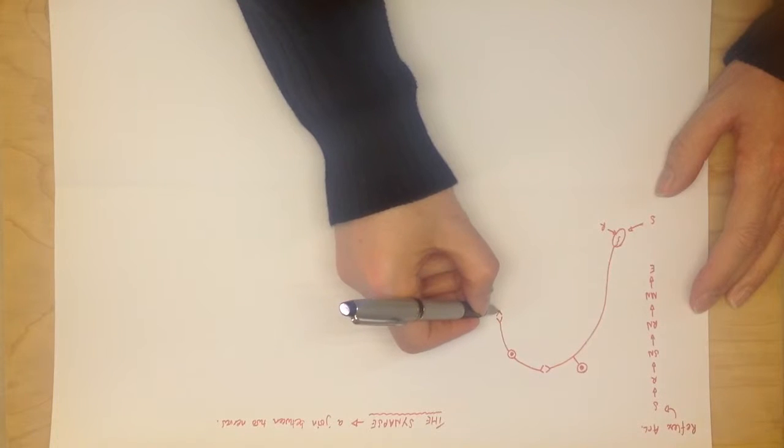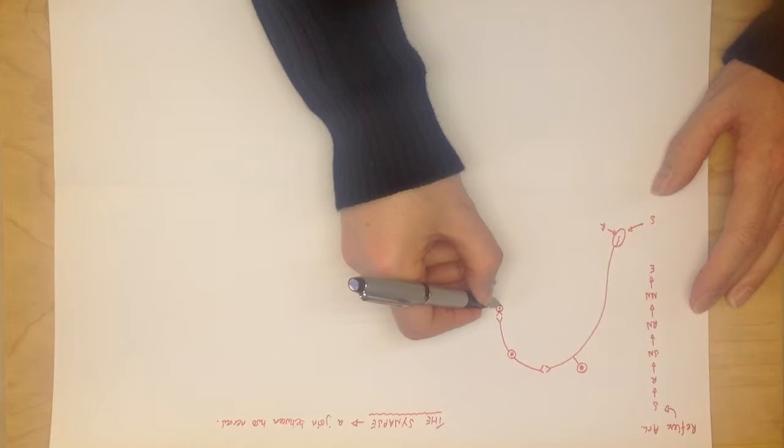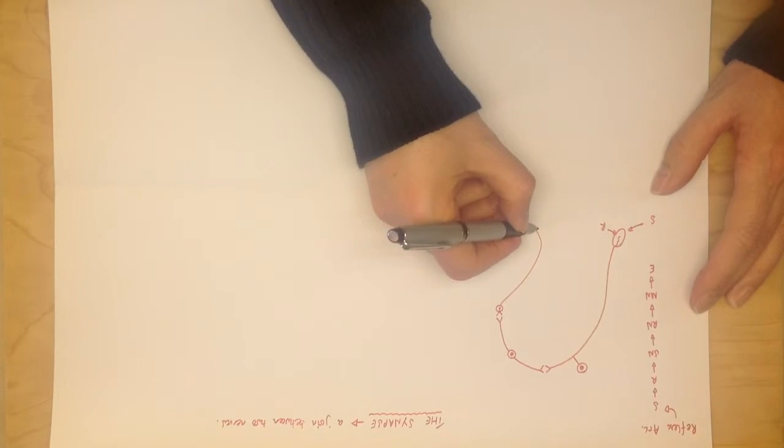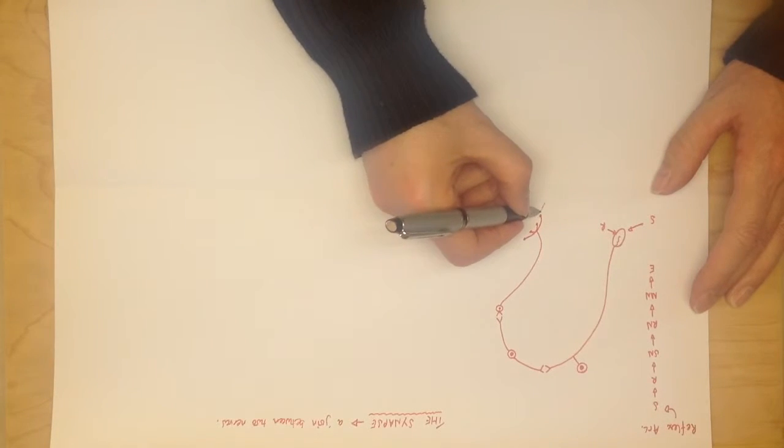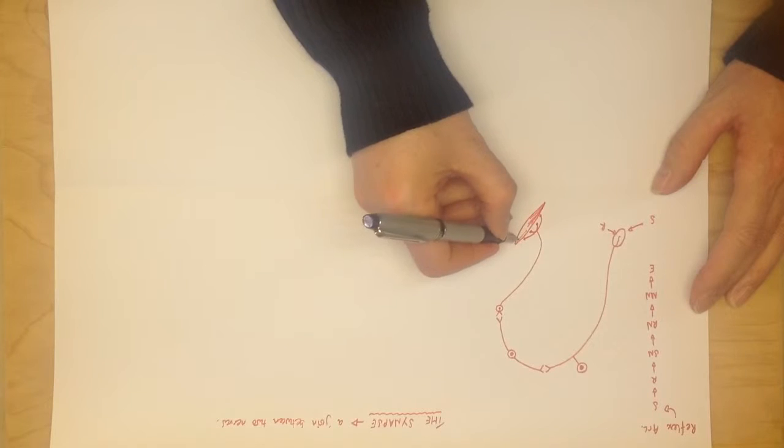And then finally, you have the motor nerve with the cell body close to the joint between the two nerves, going down to these end plates here that are attached to the effector, which I tend to draw as a muscle.